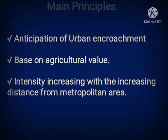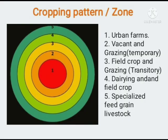Sinclair normally used five types of zones in this model to describe the cropping pattern. Those are: first, urban farms; second, vacant and temporary grazing; third, field crop and grazing; fourth, dairying and field crop; and fifth, specialized feed grain livestock.